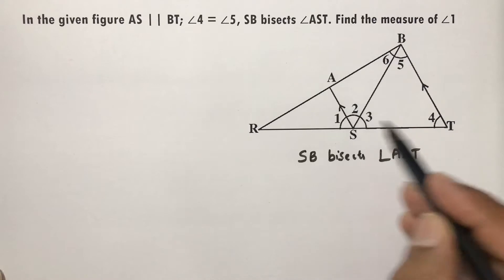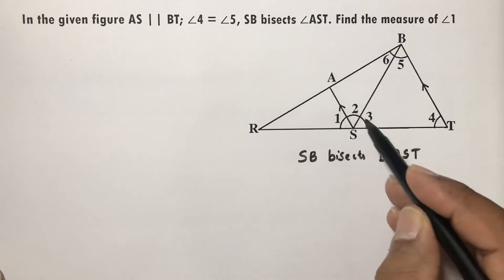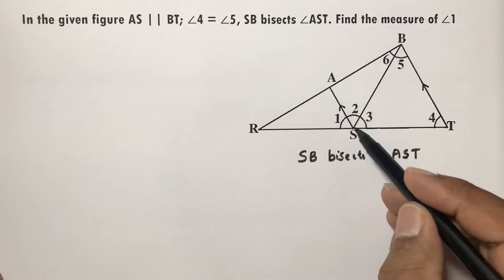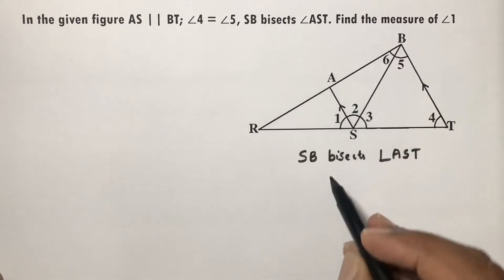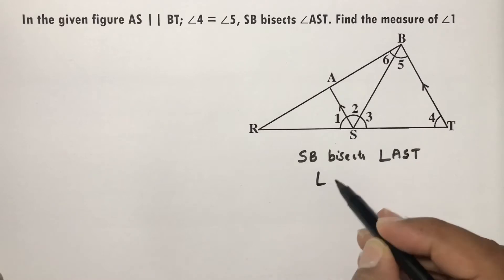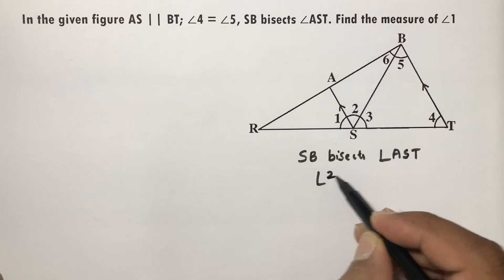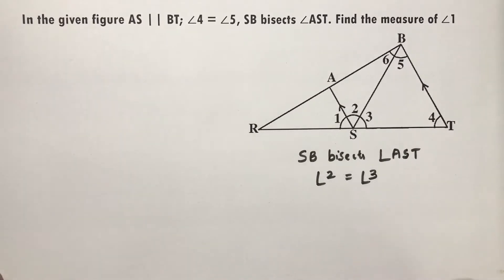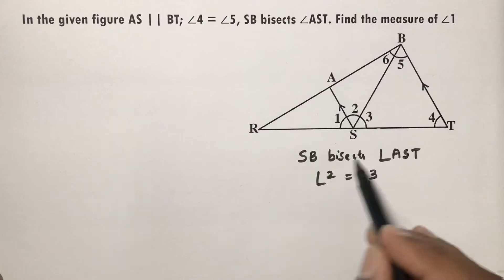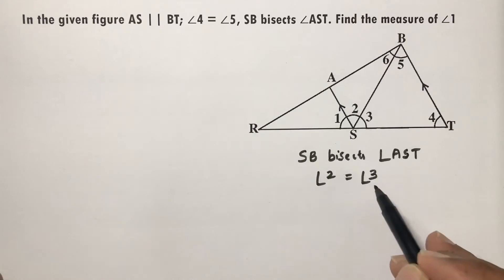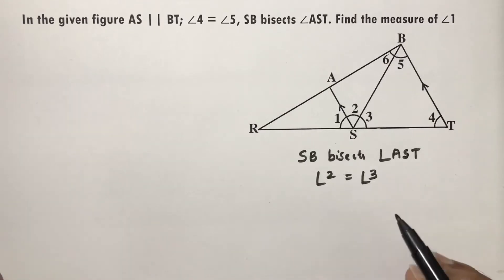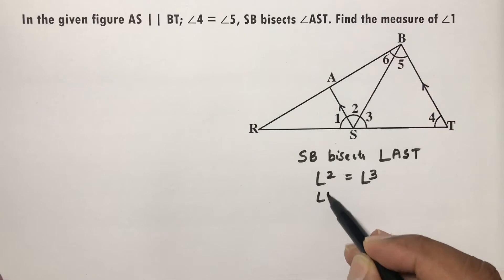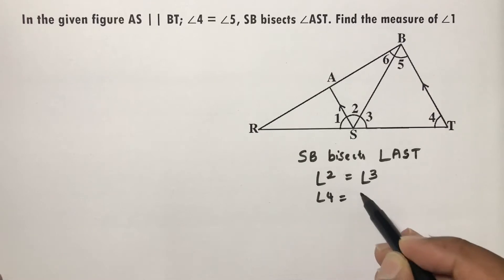In angle AST, we have angles 2 and 3. Since SB bisects angle AST, angle 2 equals angle 3. The problem also states that angle 4 equals angle 5.